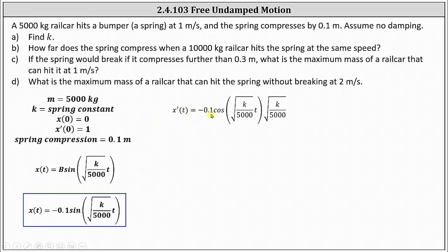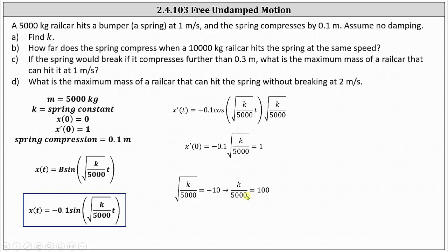x'(t) = −0.1·cos(√(k/5,000)·t)·√(k/5,000). Using x'(0) = 1, substituting t = 0: cosine(0) = 1, giving −0.1·√(k/5,000) = 1. Solving for k: multiply both sides by −10, then square both sides, then multiply by 5,000. The spring constant k = 500,000.